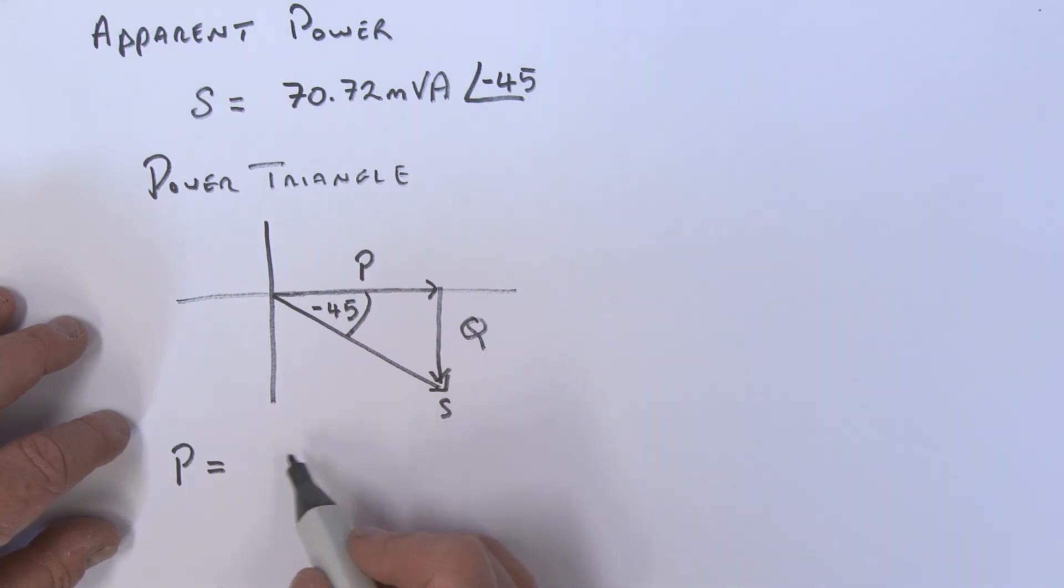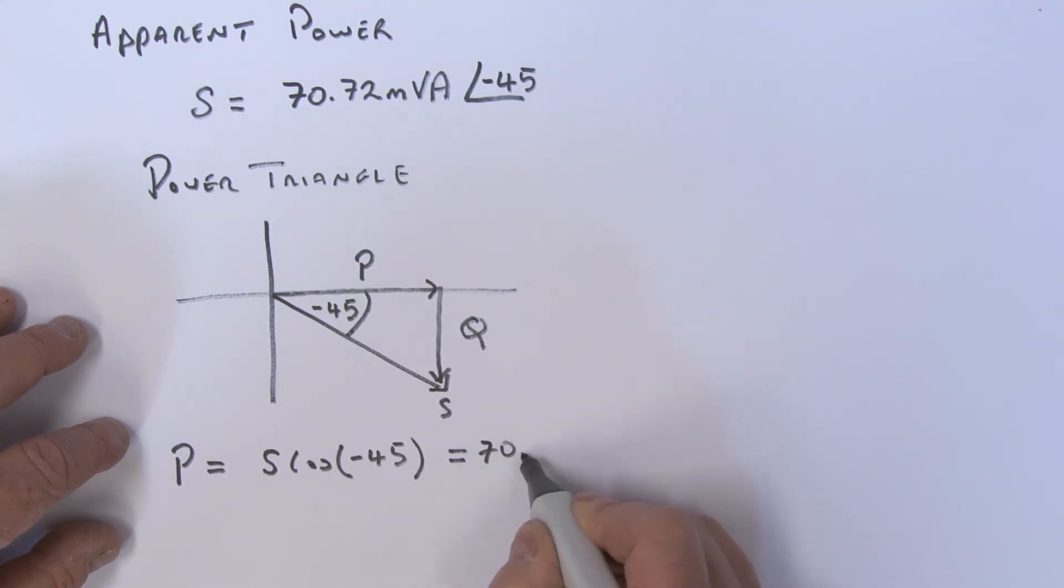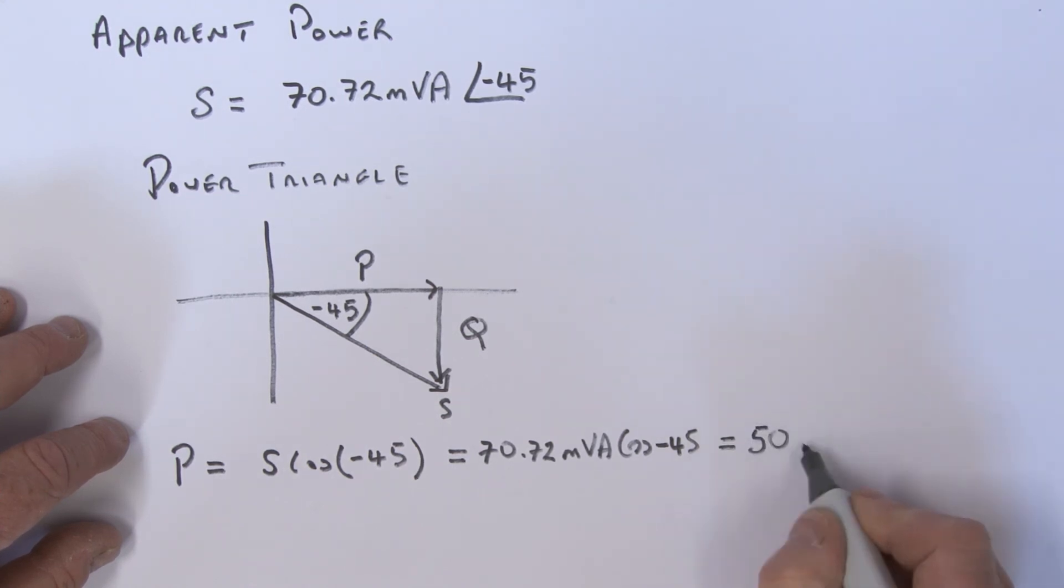So how do we do that? Well, we can say that this power P, real power, is equal to the hypotenuse over here, S, multiplied by the cosine of minus 45. And what is that equal to? That is equal to 70.72 milli-VAs times the cosine of minus 45, and if we work that out, that comes out to be 50 milliwatts.